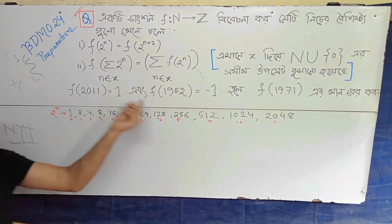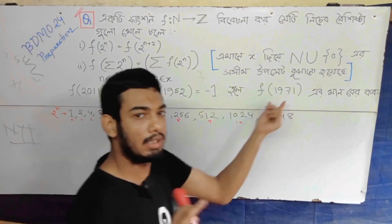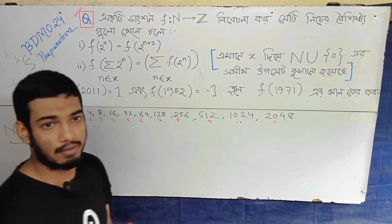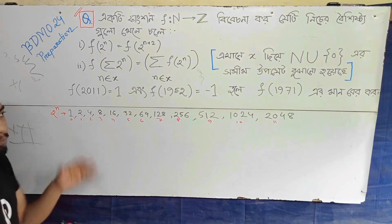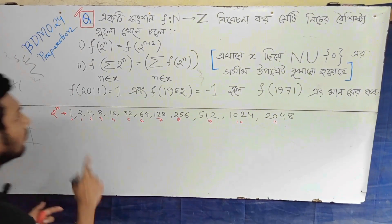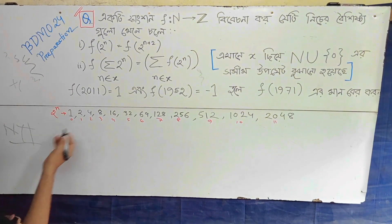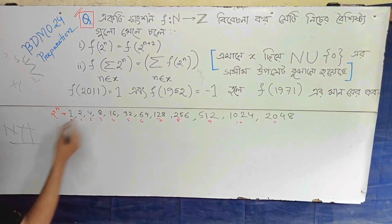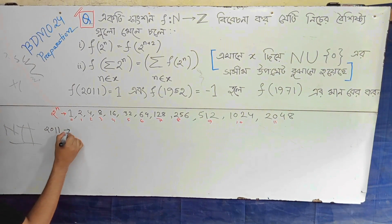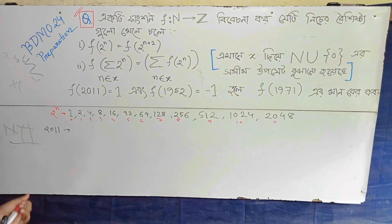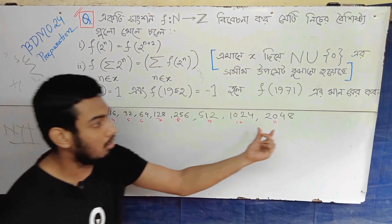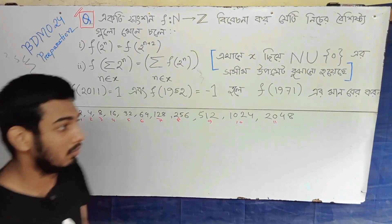We can only get 2 to the power receiver first. We have the serial standard. Now let's turn to 2011. This is the first power receiver. So 2011, we can only get here. So we can also get 2048.